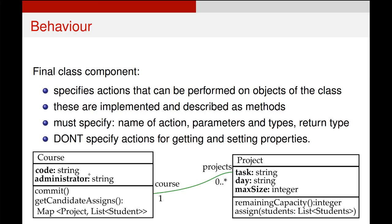The attributes are code and administrator, which are both strings. Then we've got two methods. The first is a simple commit method. It doesn't return anything, doesn't take any parameters, and has some action which you can see described in the text.